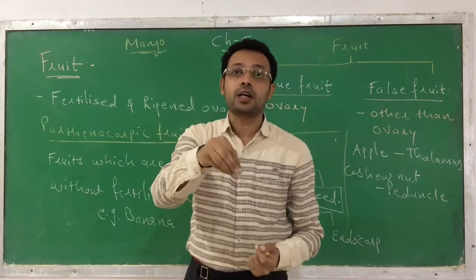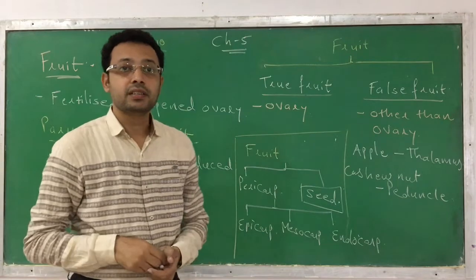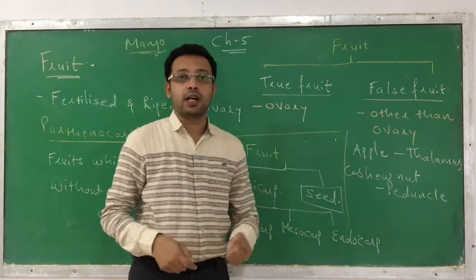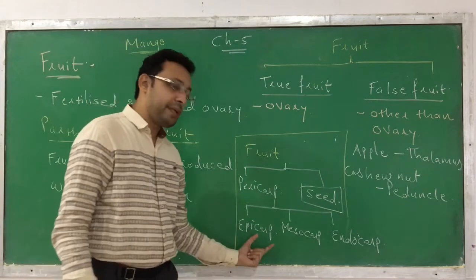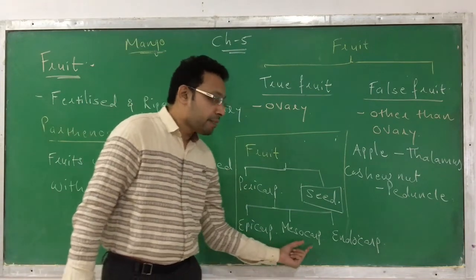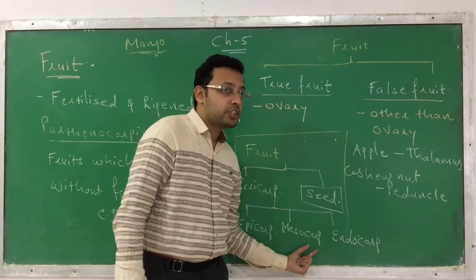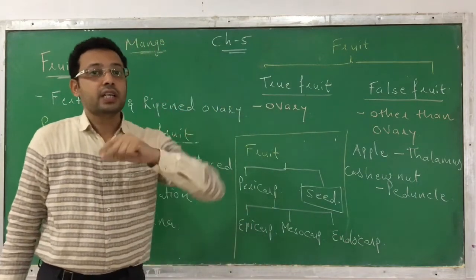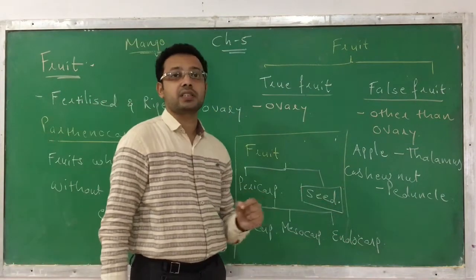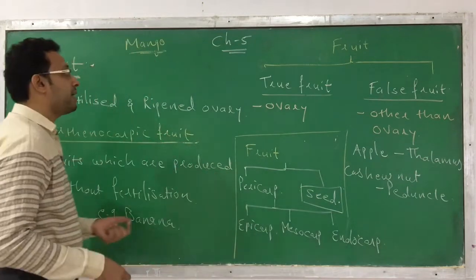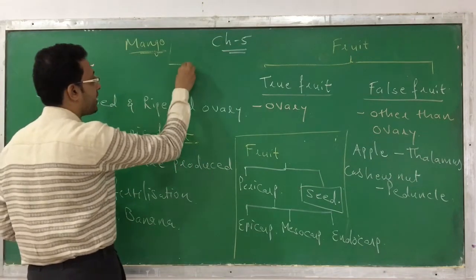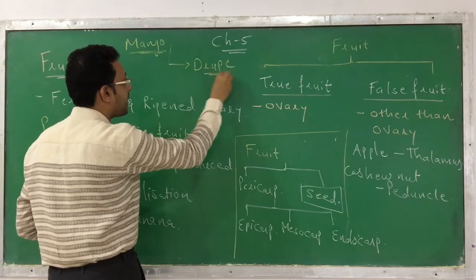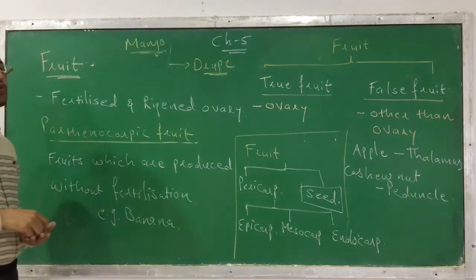The endocarp of the mango is hard and stony, and inside this endocarp there is the presence of a seed. So the three layers of a mango's pericarp are: epicarp (skinny), mesocarp (succulent and juicy), and endocarp (hard and stony), with the seed present inside.